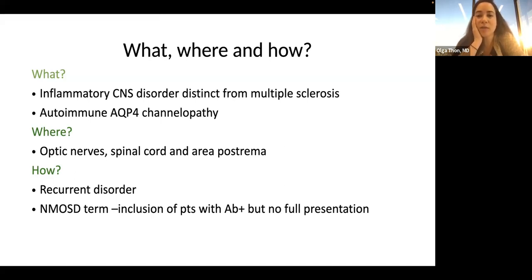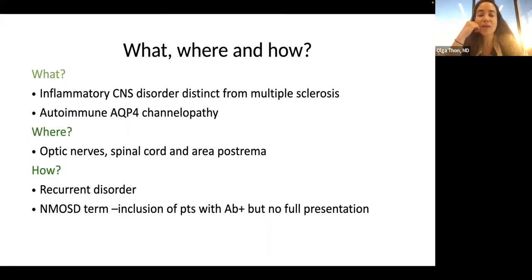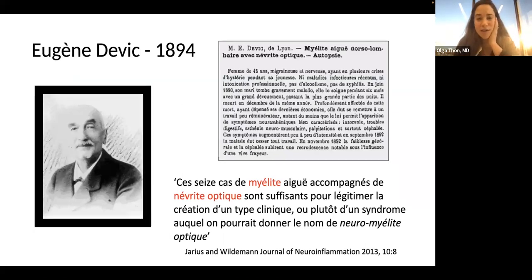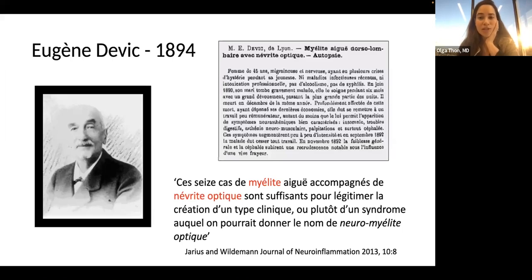You've all heard both neuromyelitis optica and neuromyelitis optica spectrum disorders. The term came into picture back in 2015 — mostly to include patients who had the aquaporin-4 antibody but did not have the full presentation of the disease. It was first described back in 1894 by Devic. Back then neurologists were Renaissance men who would be present during autopsies of their patients, trying to understand what happened. Even then he noted myelitis as well as involvement of the optic nerve.